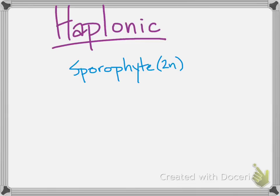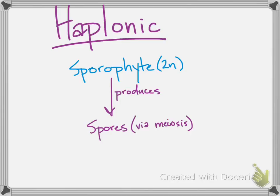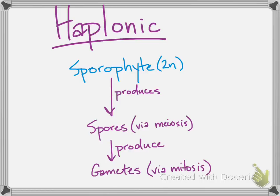Haplonic organisms spend most of their life as a haploid cell. After fertilization, a diploid sporophyte forms. This gives rise to many spores that live individually or as a multicellular organism. They form by meiosis to halve the number of chromosomes, to haploid. These adults can form gametes by mitosis, since they are already haploid, and then the cycle can begin again by fertilization.